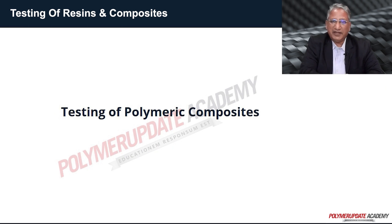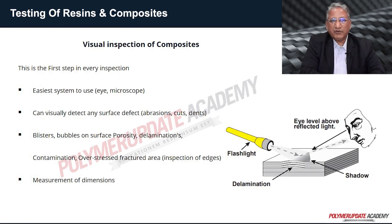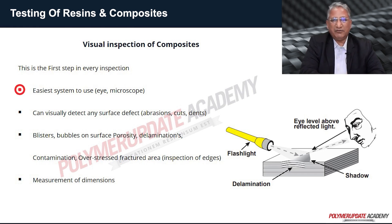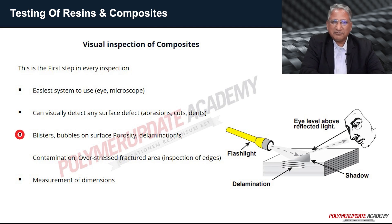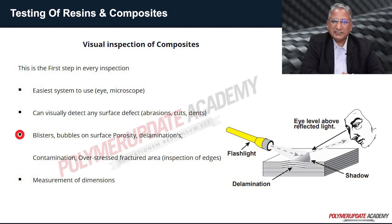Before proceeding to mechanical testing of composites, visual inspection is carried out. This is the first step in every inspection — the easiest system to use, done by eye or microscope. It can visually detect surface defects such as abrasion, cuts, dents, blisters, bubbles on the surface, porosity, delamination, presence of contamination, and over-stress fracture areas. It is also important to measure the dimensions of the manufactured composite.